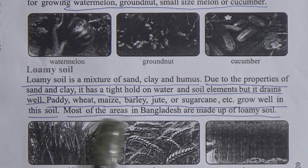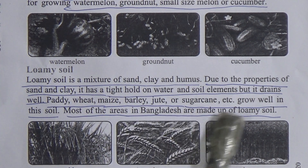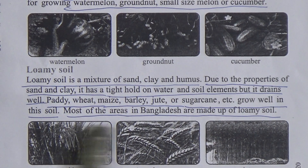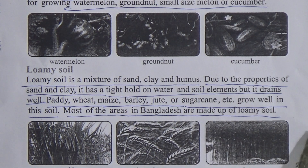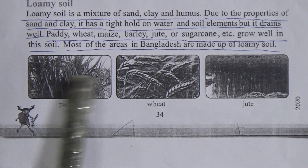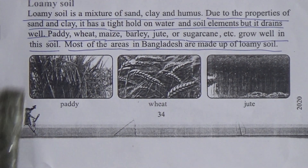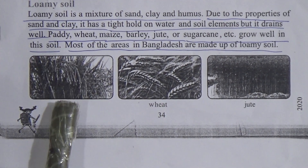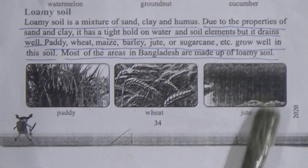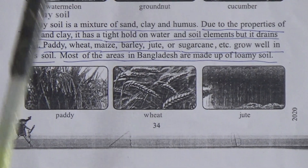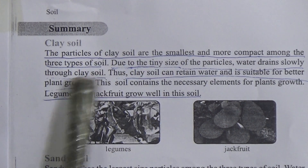Paddy, wheat, maize, barley, jute, and sugarcane grow well in loamy soil. Underline this line. Most of the areas of Bangladesh are made up of loamy soil. In the figure, paddy, wheat, and jute are shown as crops that grow in loamy soil.